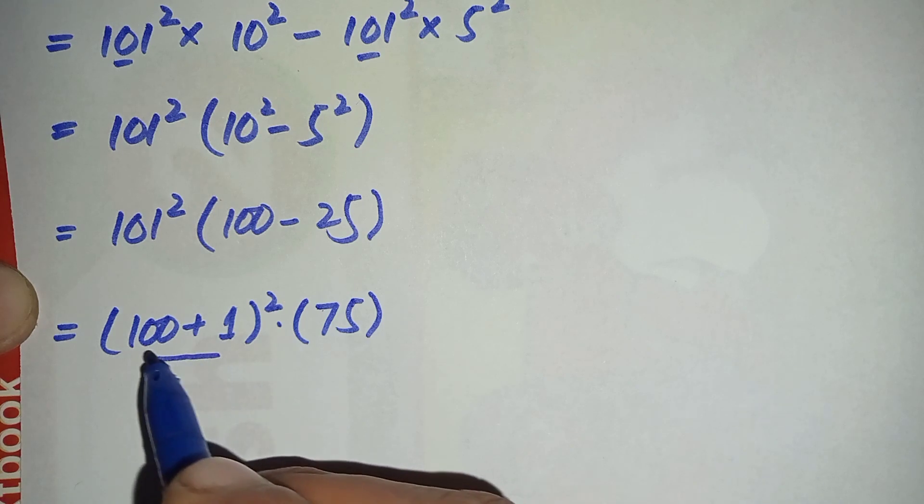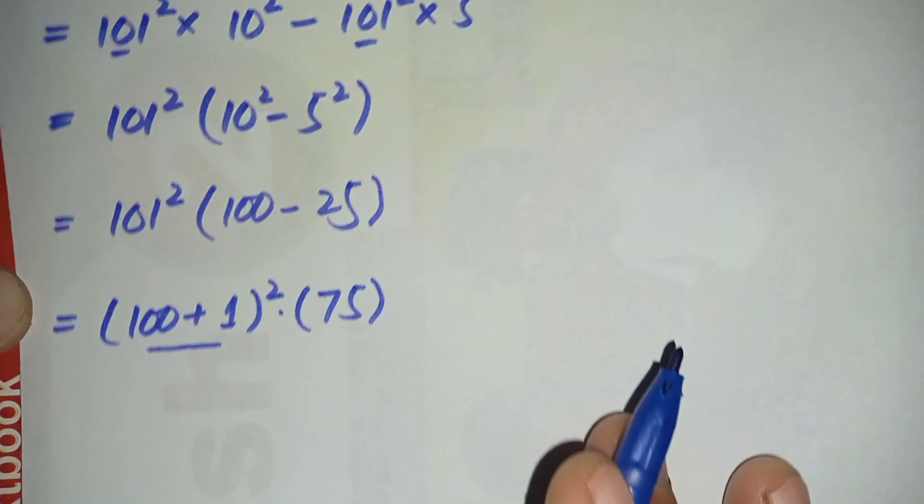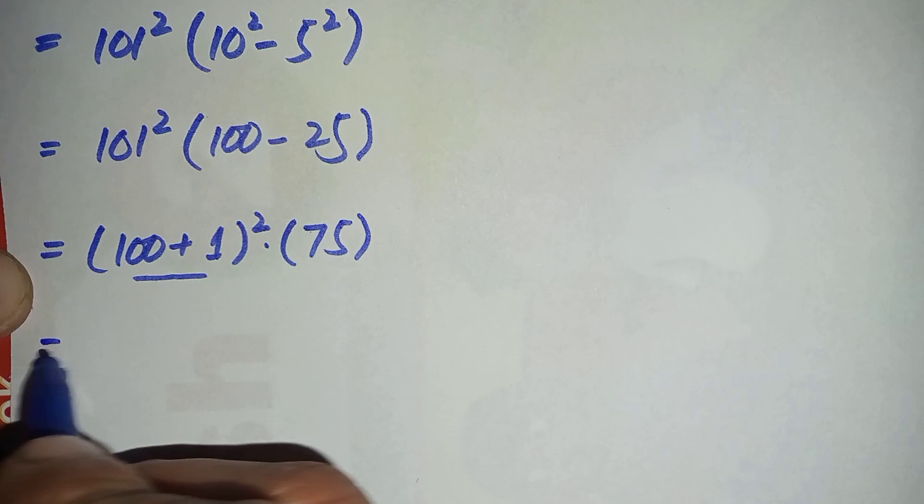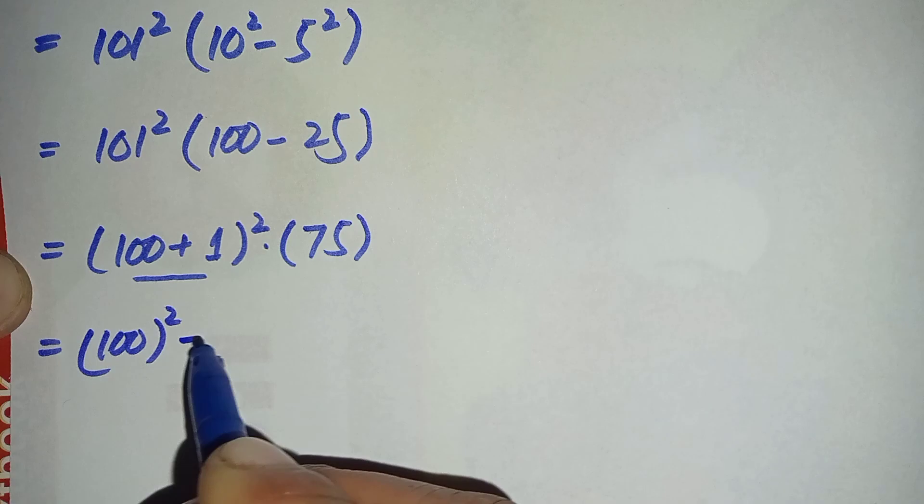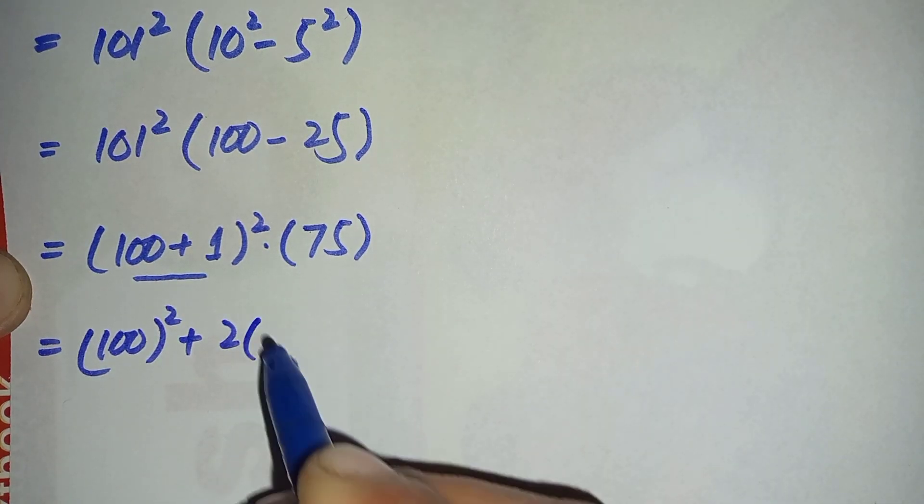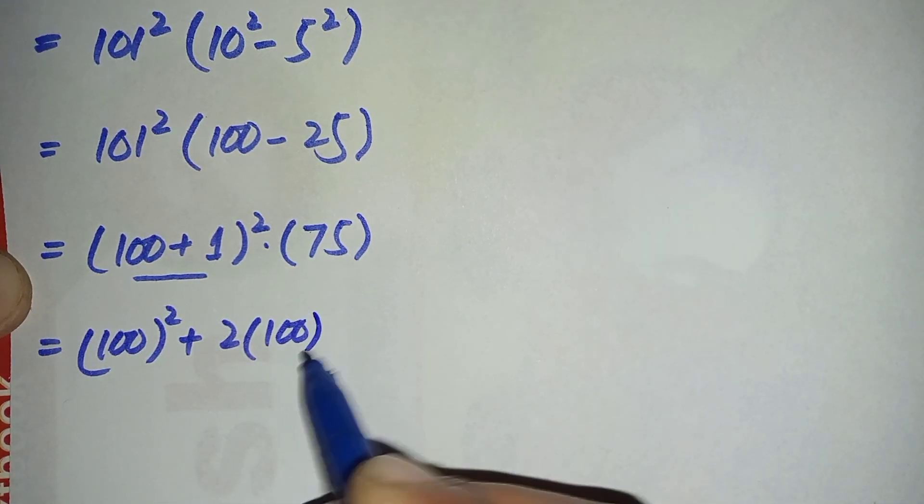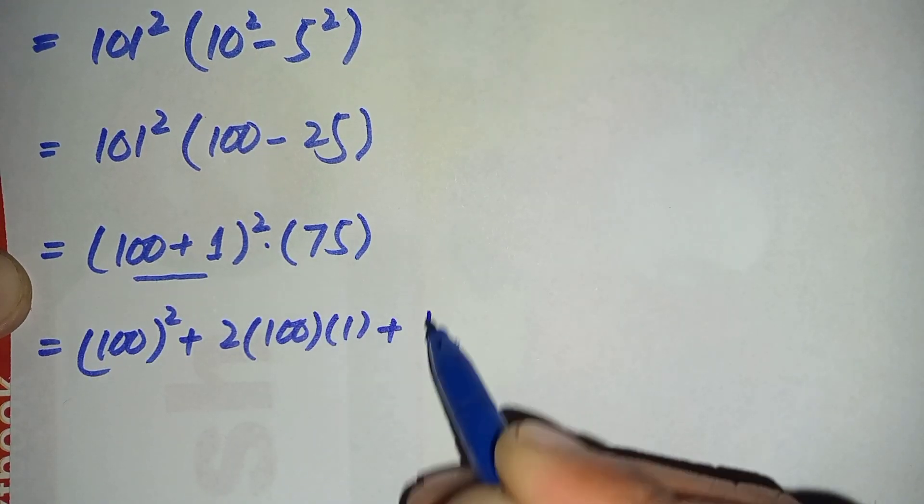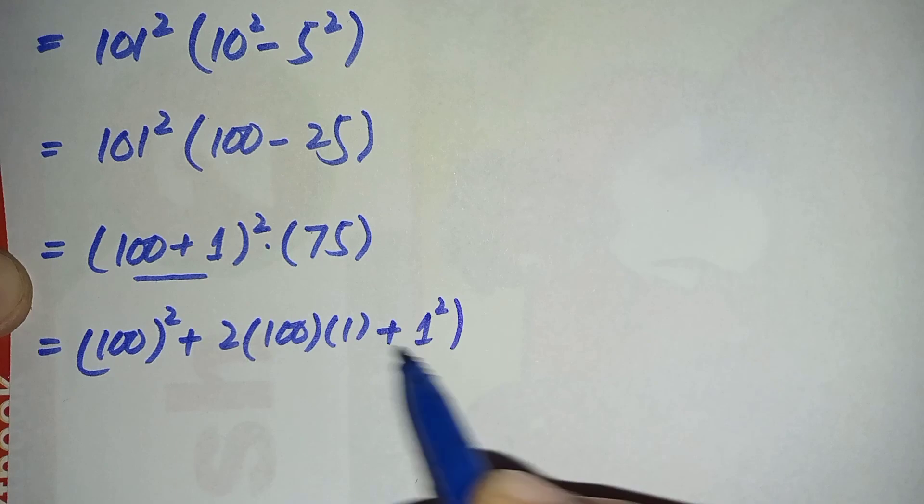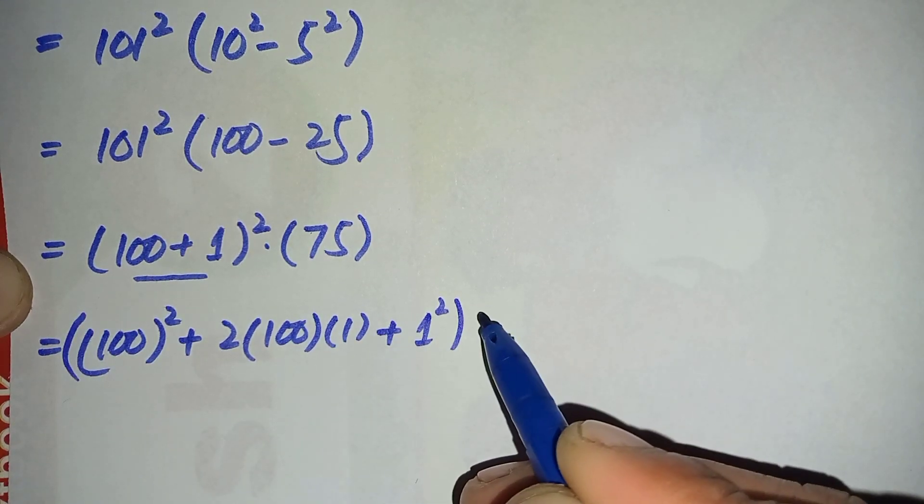Now here we will use a famous algebraic identity (a + b)². So it will become a² that is 100² plus 2 times ab, 2 times a is 100 and b is 1, plus b² that is 1², times 75.